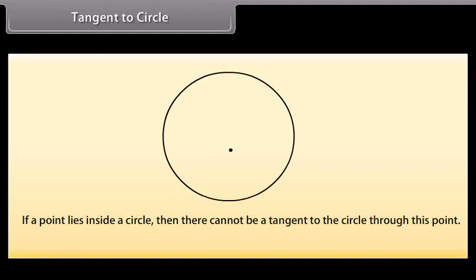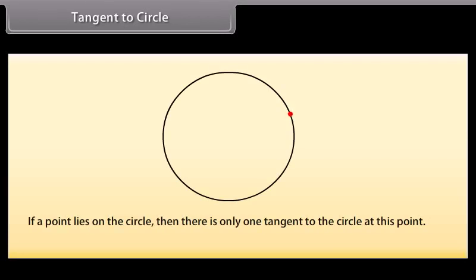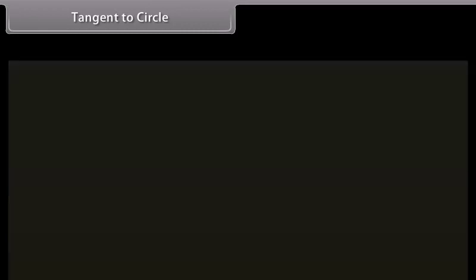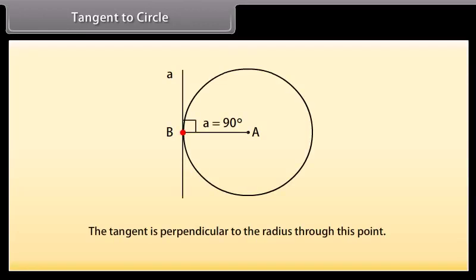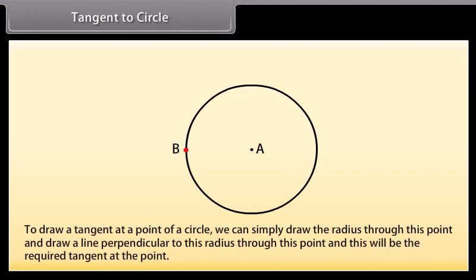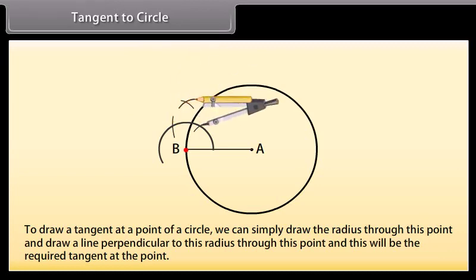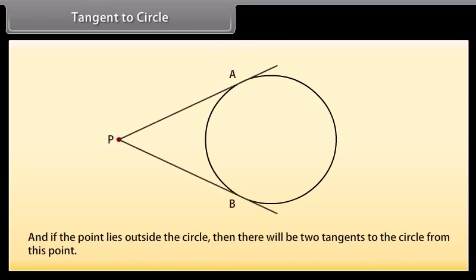Tangent to a circle. We know that if a point lies inside a circle, then there cannot be a tangent to the circle through this point. If a point lies on the circle, then there is only one tangent to the circle at that point. The tangent is perpendicular to the radius through this point. Therefore, to draw a tangent at a point of a circle, we can simply draw the radius through this point and draw a line perpendicular to this radius, and this will be the required tangent. If the point lies outside the circle, then there will be two tangents to the circle from this point.